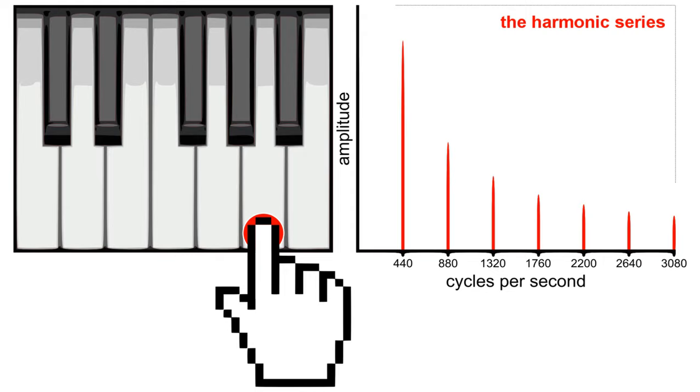For example, an A note on a standard piano may sound like a single tone, but its spectrum is actually made up of a collection of harmonically related overtones. In this case, twice the fundamental at 880 hertz, three times at 1320 hertz, four times at 1760, and so on.